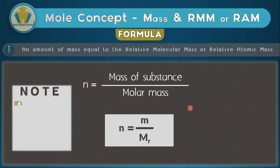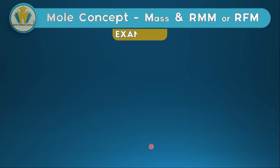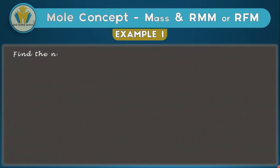When finding the number of moles for a molecule, we use the relative molecular mass. When finding the number of moles for an atom, we use the relative atomic mass as our molar mass. You should know that this formula can be used whenever we have mass in the equation and the chemical formula of a certain compound, because if we have the chemical formula we can find the molecular mass, and that molecular mass equals the molar mass.